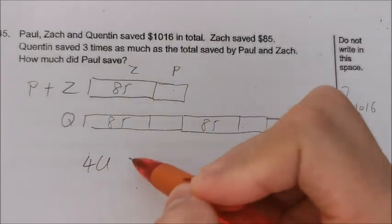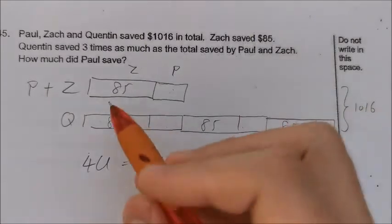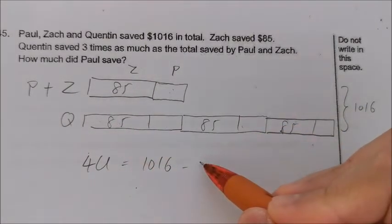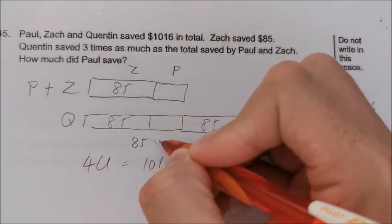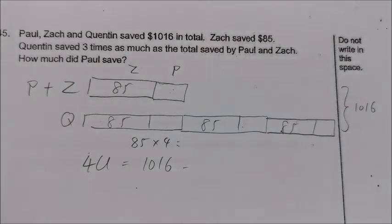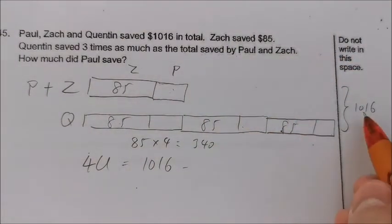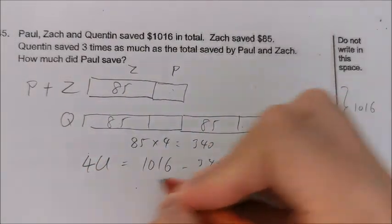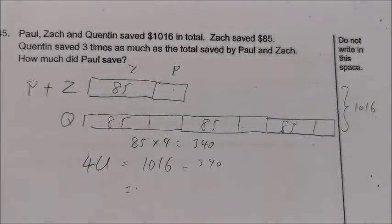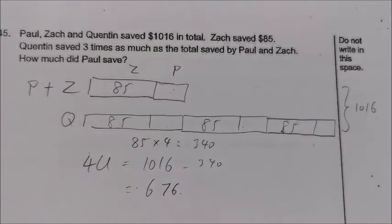So four units equals $1,016 minus away 85, four times. We can do 85 times four — that will be simpler. We have 340. So four units is just 1,016 — the total — take away all the numbers. Minus 340, so we have 676.